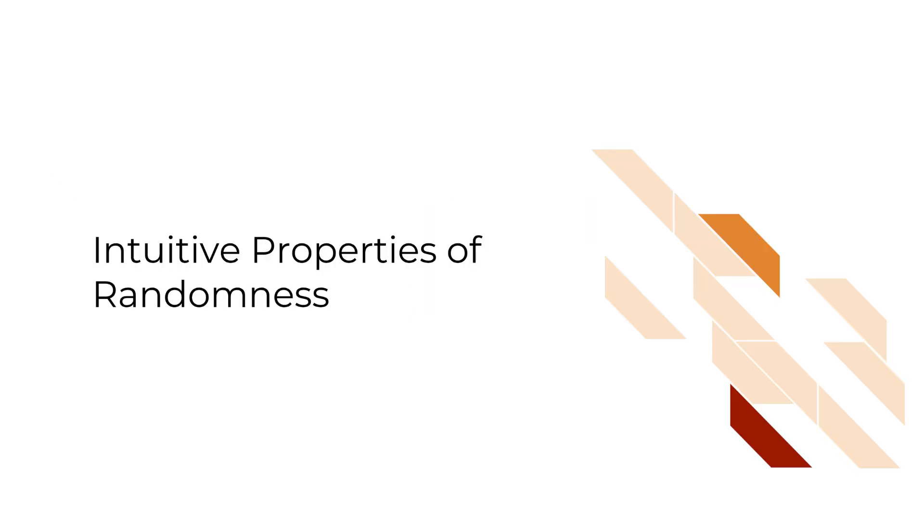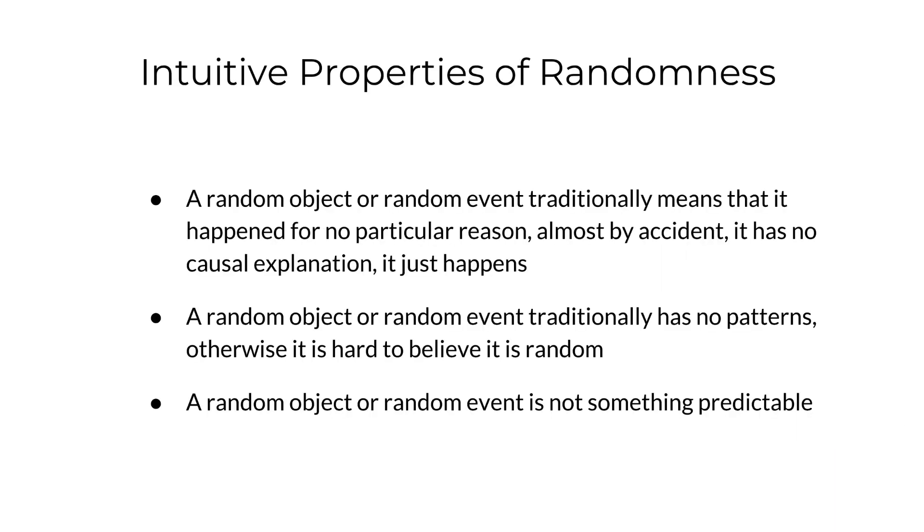Among the most common properties associated with randomness are the following. A random object or random event traditionally means that it happened for no particular reason, almost by accident, it has no causal explanation, it just happens.